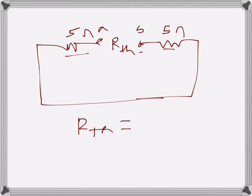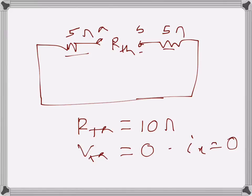So Vth is zero and Rth is 10 ohms. Therefore the current Ix is essentially zero, because in the Thevenin circuit the voltage source is zero and the resistance is 10 ohms — with no electromotive force, the current through the 6-ohm resistor is zero.